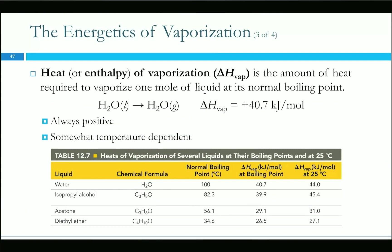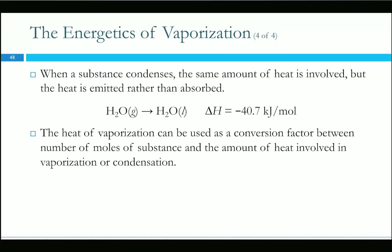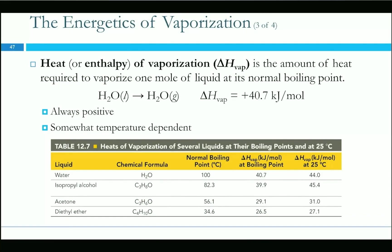The enthalpy of vaporization (ΔH_vap) is the amount of energy it takes to go from a liquid to a gas — not including the energy to heat up to the boiling point. Going from liquid to gas is always positive (endothermic); going from gas to liquid is negative (exothermic). For water, ΔH_vap = +40.7 kJ/mol for vaporization and −40.7 kJ/mol for condensation.